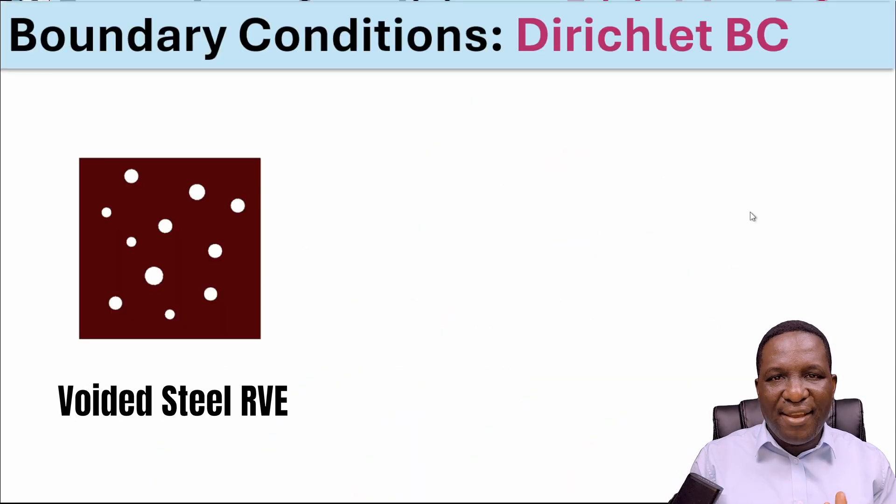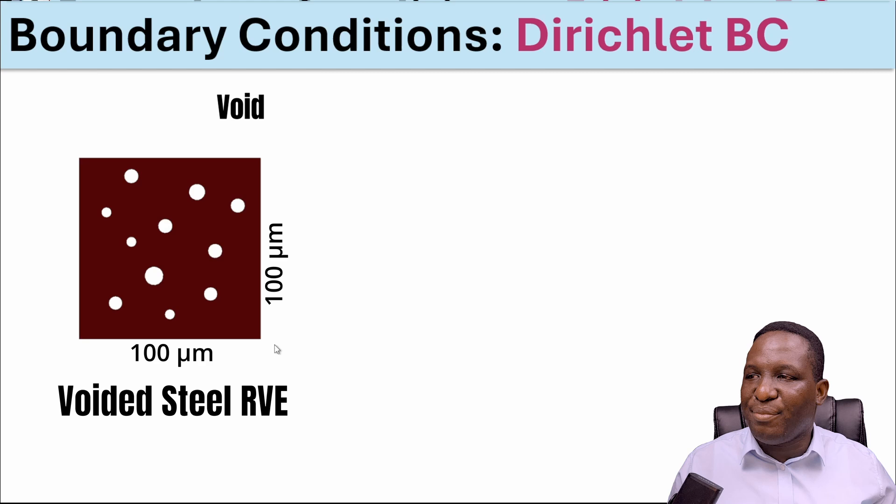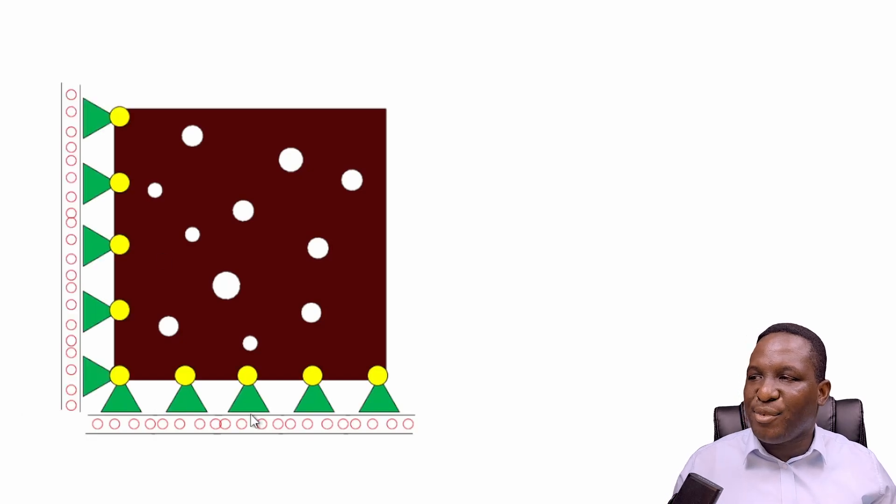We're going to run through some of the theories around Dirichlet boundary condition and its use in setting up a model and how you can generate a stress-strain graph. If we look at what we see here, that's a voided steel material with a dimension of 100 by 100, and the little white dots on the sample are basically the voids. We're going to impose a uniaxial tensile testing on the model by holding the base and back end of this model.